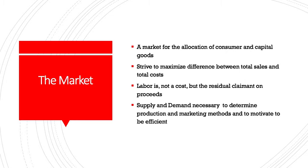The second feature of economic democracy is the market — the way that we allocate consumer and capital goods. We trade them using supply and demand to help set prices. What the enterprise is trying to do is to maximize the difference between total sales and total costs, just as enterprises do within a capitalist system. However, under capitalism, labor is considered a cost, and the capitalist tries to cut it as much as possible. Under economic democracy, labor is not a cost but a residual claimant on the proceeds — the enterprise cuts other costs in order that labor can benefit from the work they do.